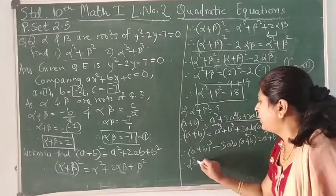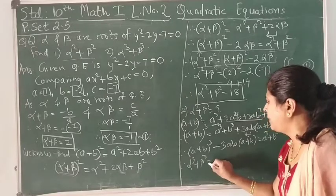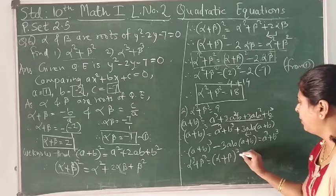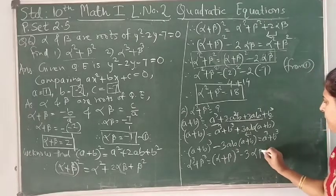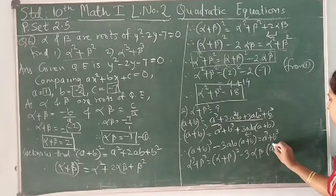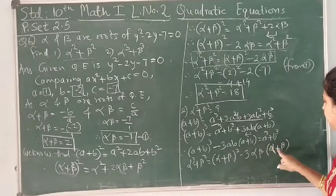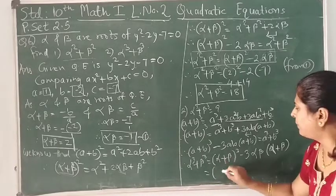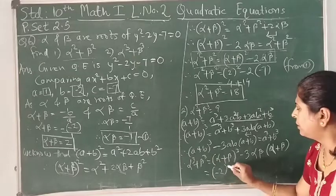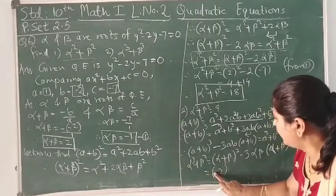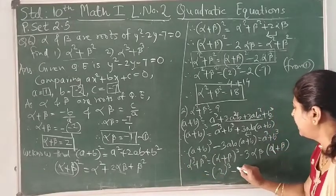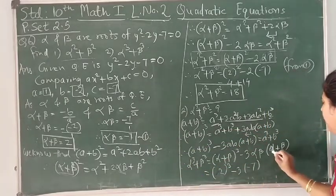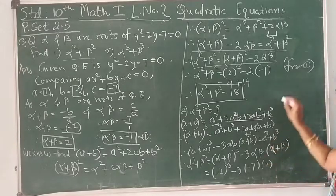Now substitute the values: α³ + β³ = (α + β)³ - 3αβ(α + β) = (2)³ - 3×(-7)×(2), where α + β = 2 and αβ = -7.